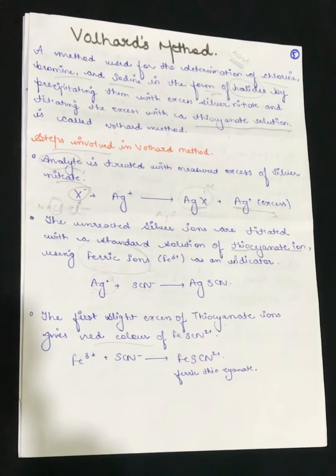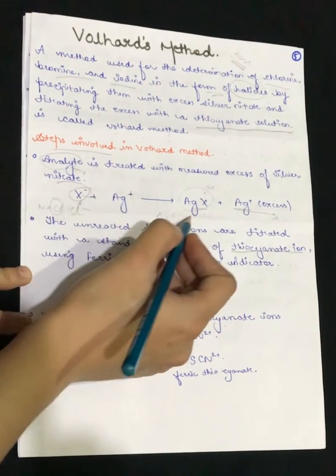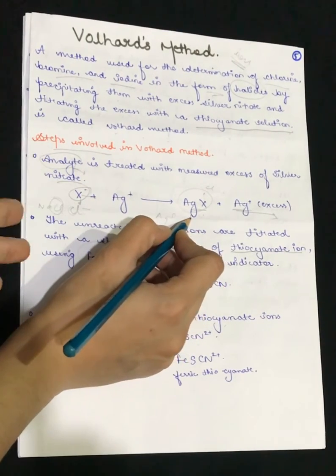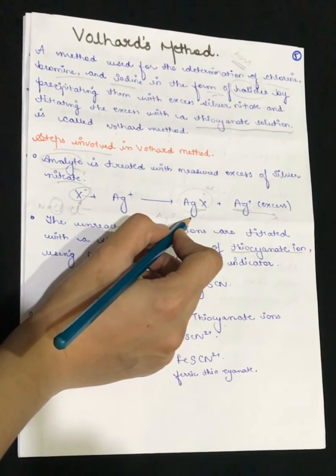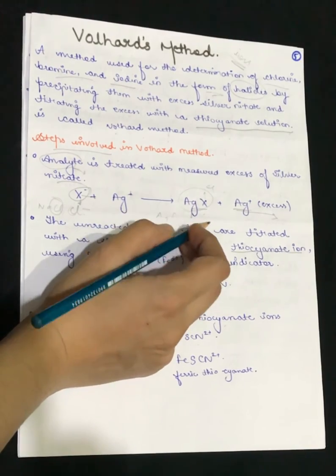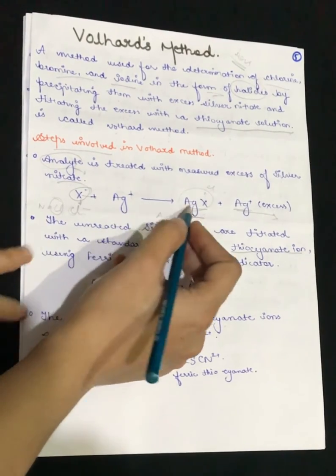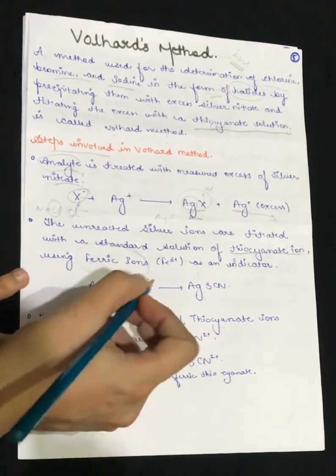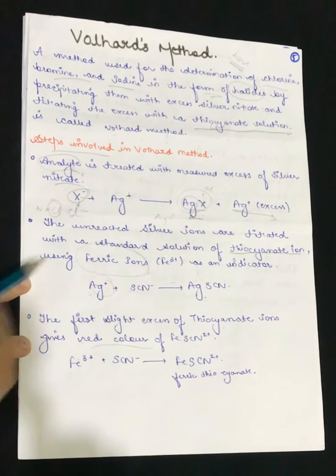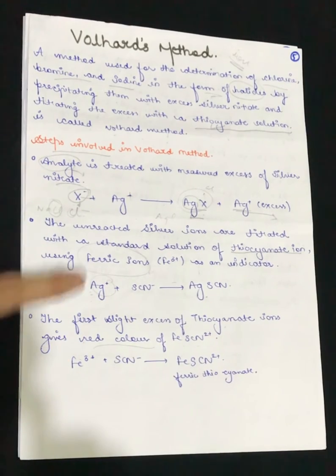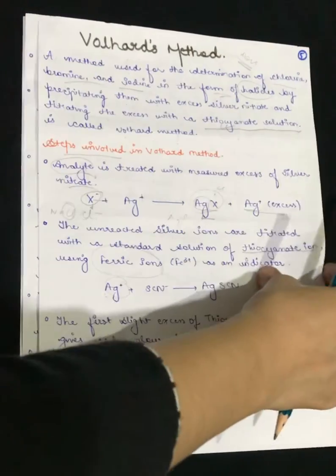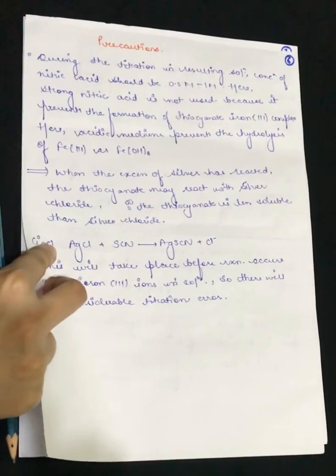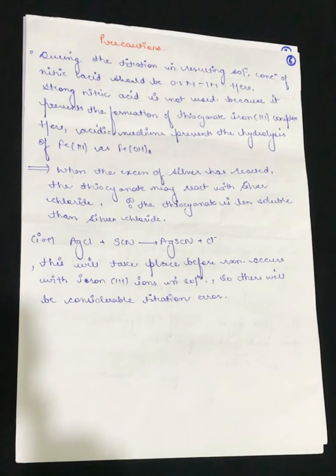Here are the steps written out: first, the halide — whether it is AgCl, AgBr, or AgI — is precipitated. After that, the excess silver reacts with the thiocyanate solution to give silver thiocyanate. With the ferric indicator, we observe a red or reddish-brown color at the endpoint.